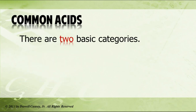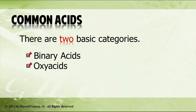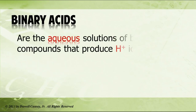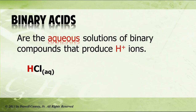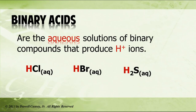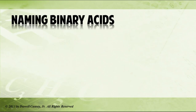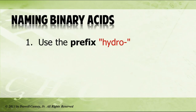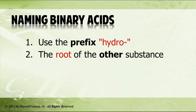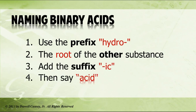There are two types of common acids: binary acids and oxy acids. Binary acids are aqueous solutions of binary compounds that produce hydrogen ions. Naming binary acids goes as such: first, you use the prefix hydro, then the root of the other substance, add the suffix -ic, and then say acid.